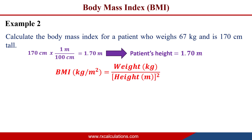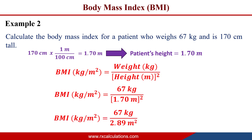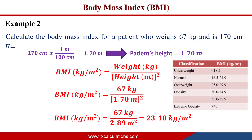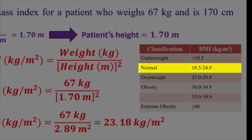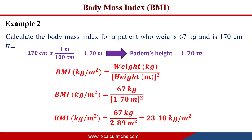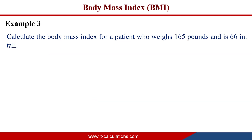Substituting into the metric equation: BMI = 67 kg ÷ (1.70 m)². Squaring 1.70 gives 2.89 m², so BMI = 67 ÷ 2.89 = 23.18 kg/m². Referencing the classification table, 23.18 falls between 18.5 and 24.9, which indicates that this patient's weight is normal.